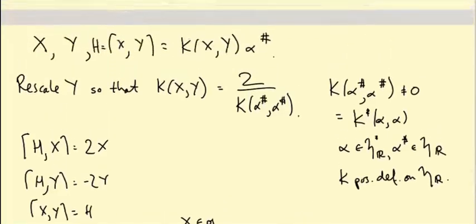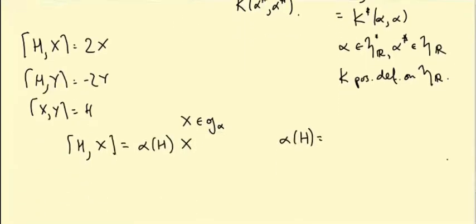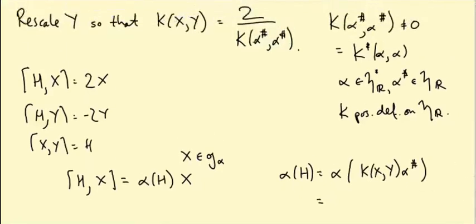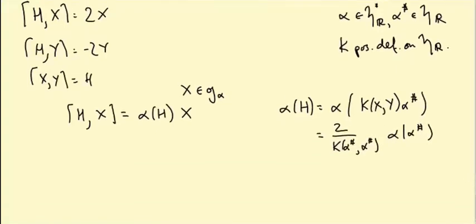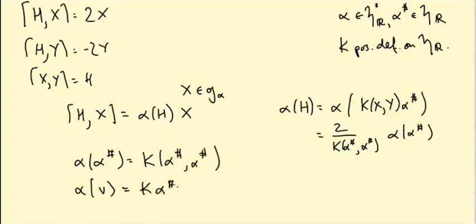Well x is in little g alpha, so this is just equal to alpha(h) x. So we just need to compute alpha of h. Well that's the same as alpha of K(X,Y) alpha sharp. Let's bring this scalar factor out K(X,Y) and we know what K(X,Y) is, it's 2 over K alpha sharp alpha sharp. And then alpha evaluated on alpha sharp. But alpha evaluated on alpha sharp equals K of alpha sharp alpha sharp by definition of alpha sharp. So this is just equal to 2. So alpha of h is 2 and that gives us this first equation and the second equation is similar.